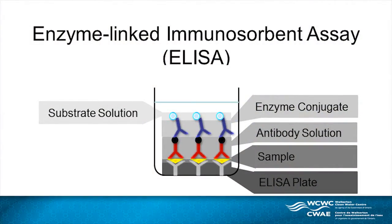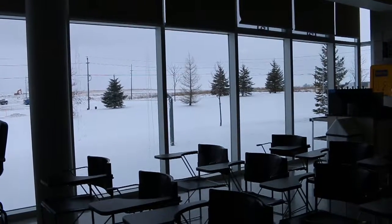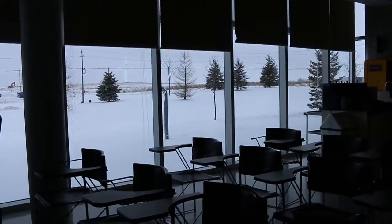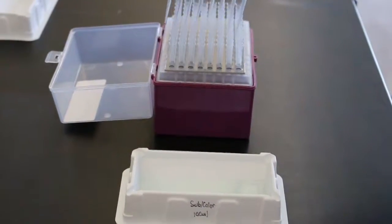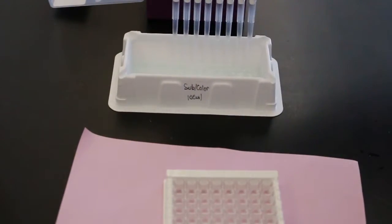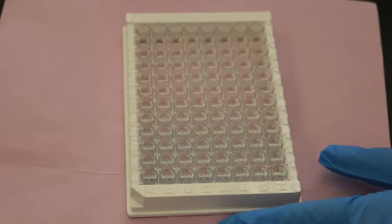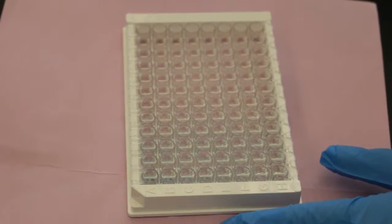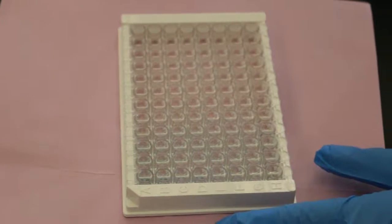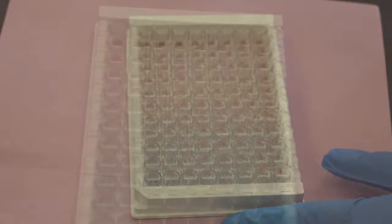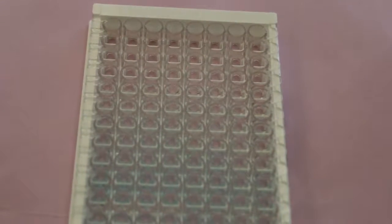The substrate solution is inverted several times and poured into a clean tray. This solution is light-sensitive and must be protected from direct sunlight. 100 microliters of substrate solution is added into all of the wells using a multi-channel pipette. Upon this addition, you will see the wells tint blue. The samples containing higher levels of toxins will appear clearer than the samples with lower levels of toxins, which will be tinted a brighter blue.